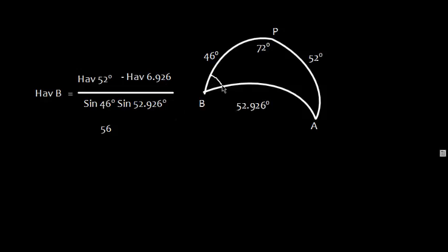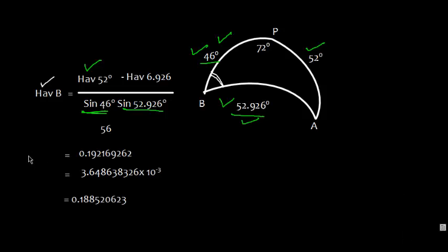I've used the normal scientific calculator to calculate individual haversine values. Similarly, let's work out and find this angle B. Again, same haversine formula. Hav angle B is equal to hav of this side, which is 52, minus hav of difference of 46 and 52.926 degrees, divided by sin 46 and sin of that.